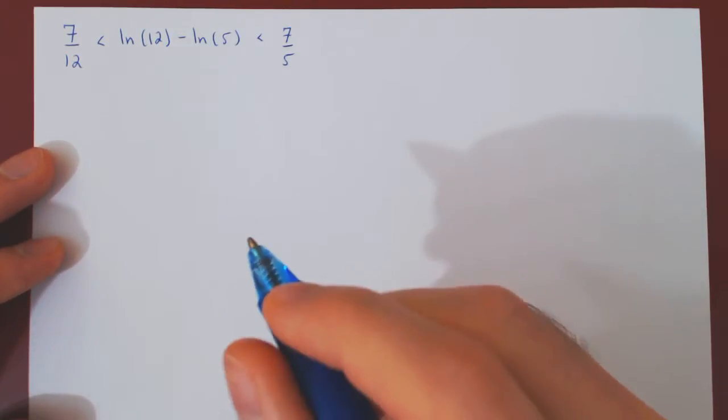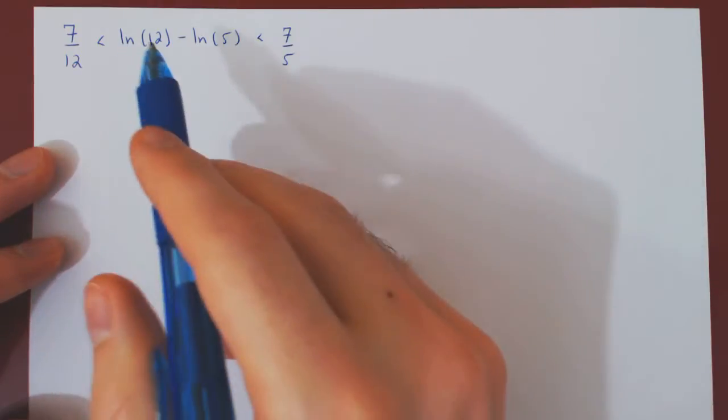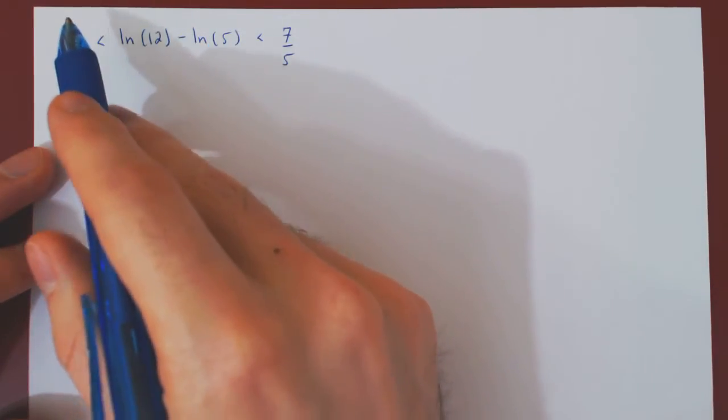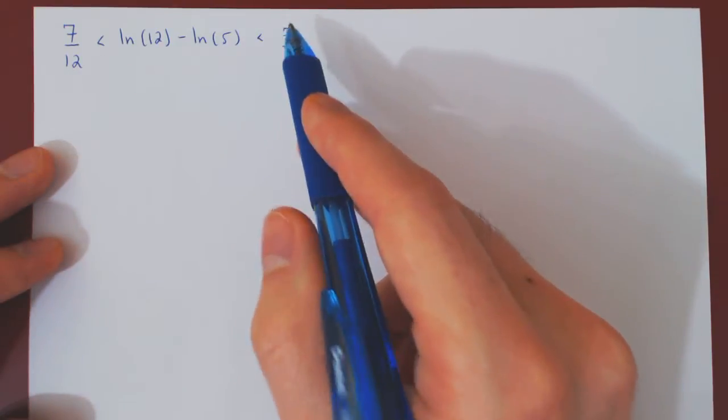Okay, so in this video, we will use the mean value theorem to prove that ln of 12 minus ln of 5 is larger than 7 on 12, but smaller than 7 on 5.